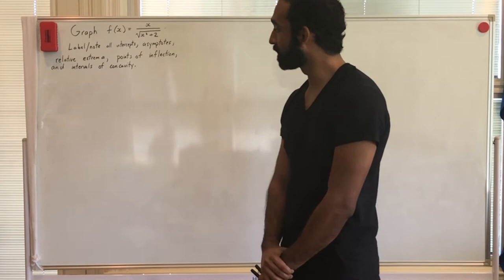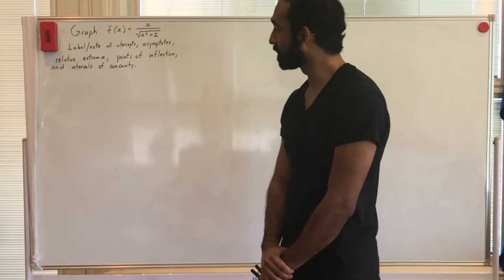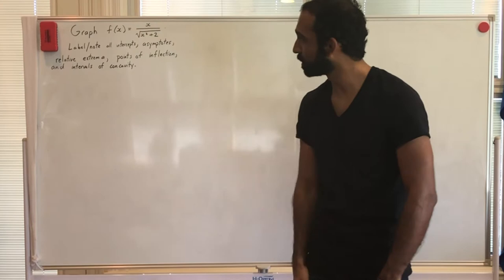Let's start off with this. It's not something we're going to know off the top of our head, but we want to label all the intercepts, all the asymptotes, the relative extrema, the points of inflection, and intervals of concavity.